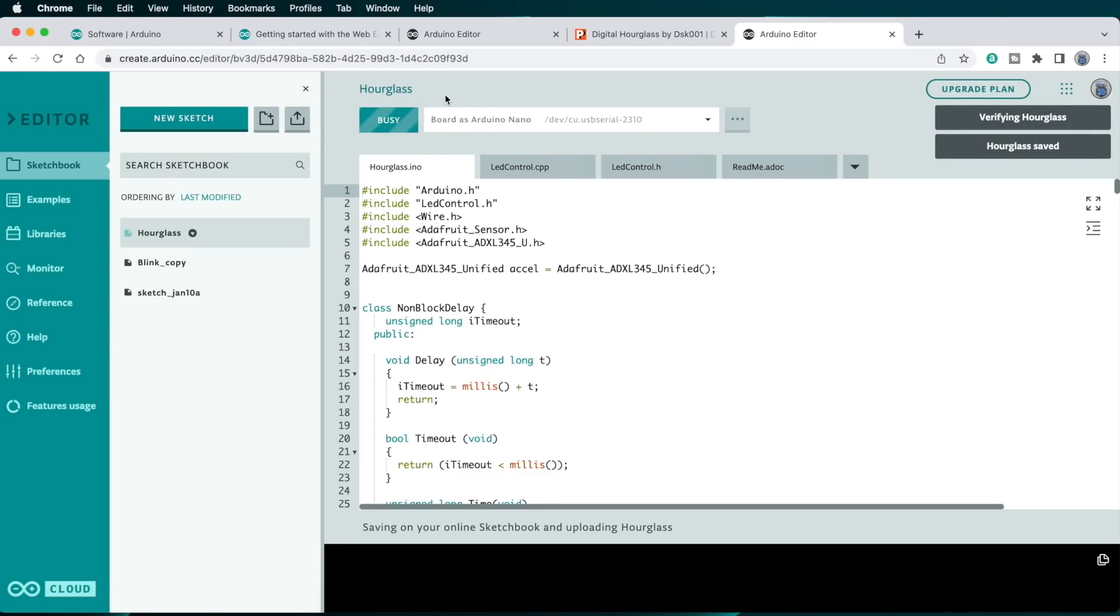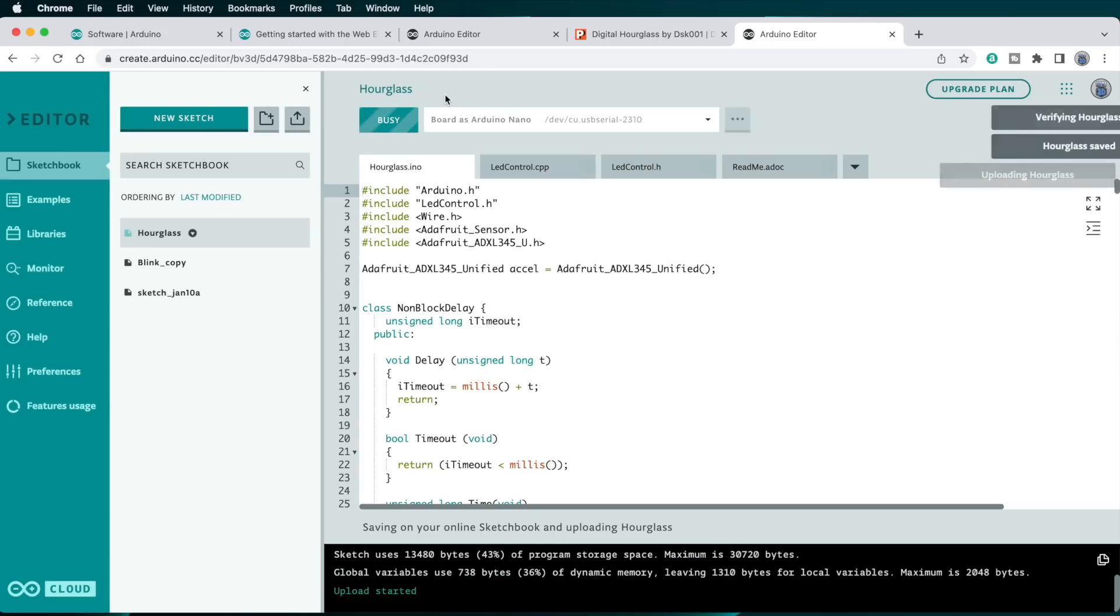Do that now, so the Nano is programmed and ready for installation in the hourglass. If you had the blink sketch loaded on the Nano, it'll be replaced by the hourglass sketch, and the green LED will stop blinking.